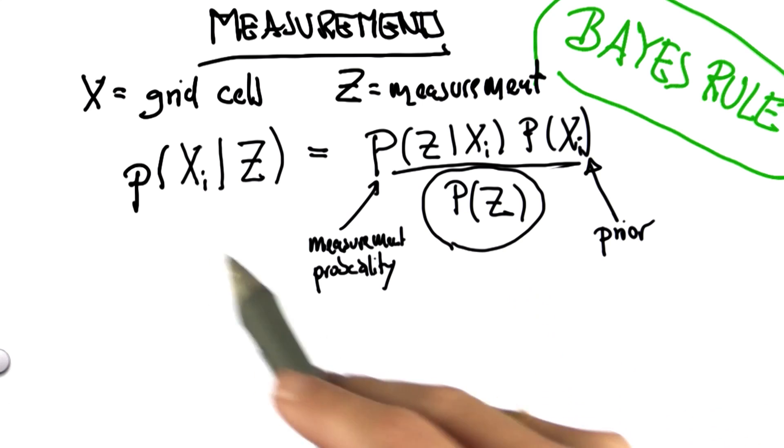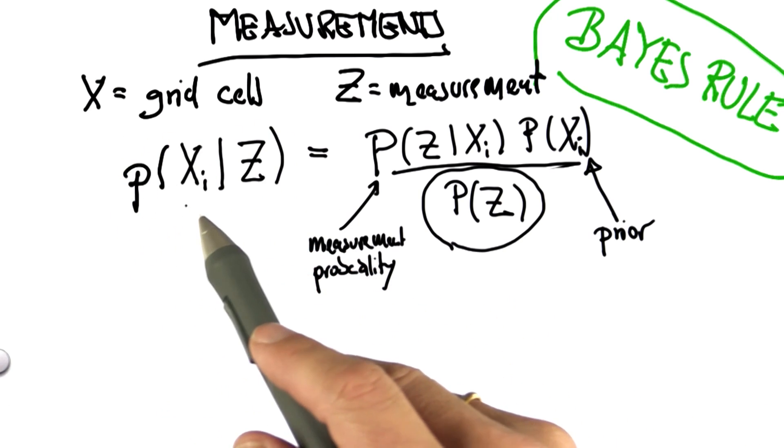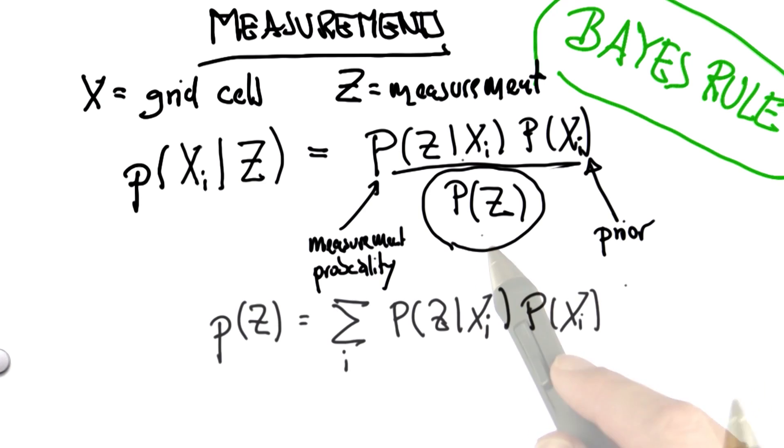And here's the trick. No matter what p(z) is, because the final posterior has to be a probability distribution, by normalizing these non-normalized products over here, we will exactly calculate p(z). Put differently, p(z) is the sum over all i of just this product over here.